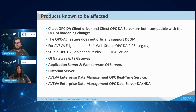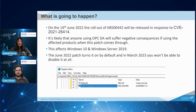Historian communication itself isn't affected; however, remote administration via the SMC won't function. Both OPC Real Time server and OPC data server DA and HDA won't be able to communicate for the same reason. On the 14th of June 2022, the rollout of the KB has been released in response to this CVE.